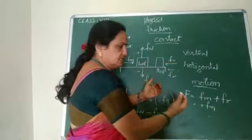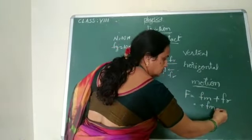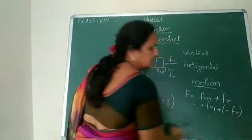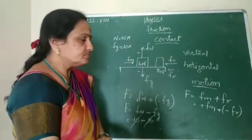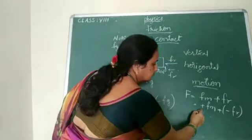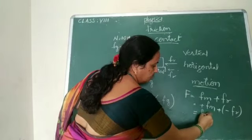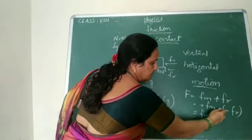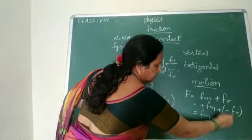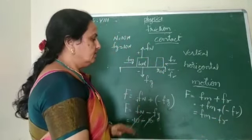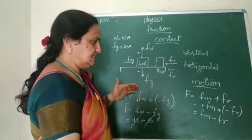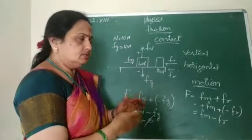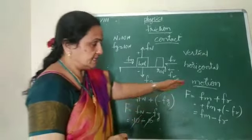The friction force is in the opposite direction. Simplifying this, we have: muscular force plus into minus friction force. If both are the same quantity — same magnitude — then the object is at rest.